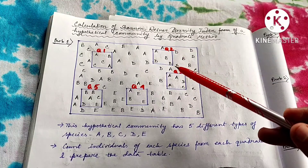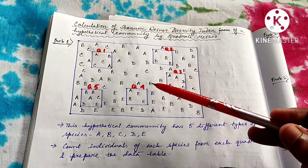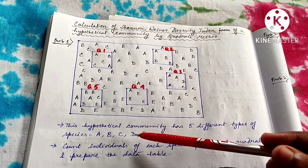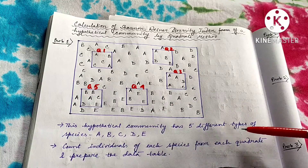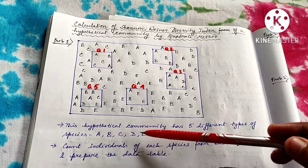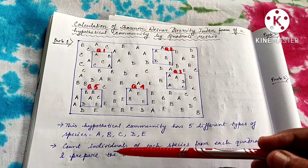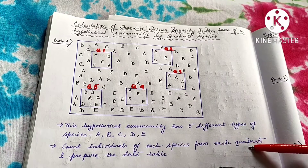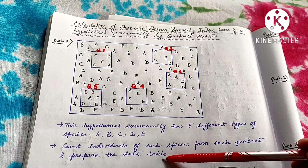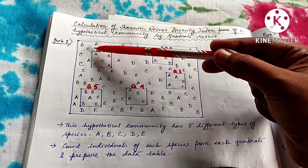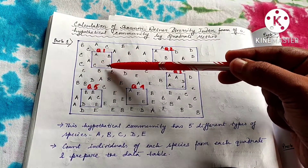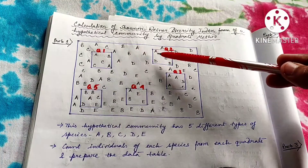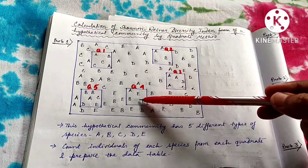In this hypothetical community you can clearly see that there are 5 types of species. The hypothetical community has 5 different types of species: A, B, C, D, and E. Now count the individuals of each species from each quadrat and prepare the data table. You have to count the individual number of species from each quadrat.